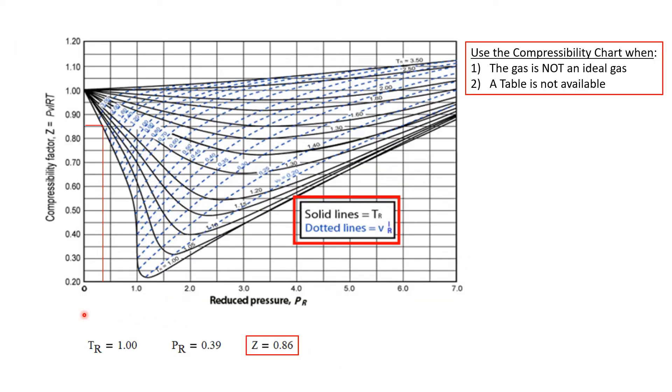So here's our generalized compressibility chart. We see our horizontal axis is the reduced pressure, and the vertical axis is this compressibility factor Z that we are interested in finding. And we have all these different lines which represent different values of the reduced temperature.